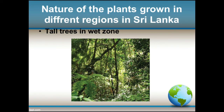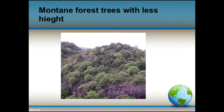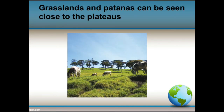Tall trees are grown in the forests distributed in wet areas due to the uniform heavy rainfall and temperature that prevails throughout the year — example: Sinharaja Forest. Trees with less height can be seen in the mountain forest, which can be seen in Wilpattu, Udawalawe, and Wasgamuwa areas. Grasslands and Patanas can be seen close to the plateaus, and short trees grow there due to changes in rainfall, temperature, and altitude.